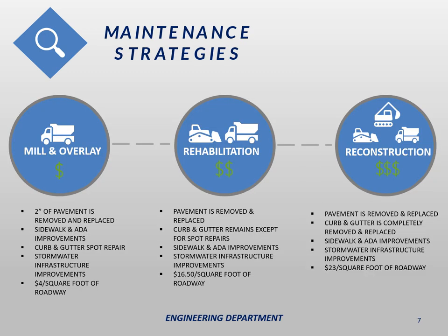There are three major types of projects we typically perform: a mill and overlay, a rehab, and a reconstruction. A mill and overlay is the simplest. During a mill and overlay we remove the top couple inches of pavement using a milling machine and then put down a couple inches of new bituminous or asphalt pavement. We are also required by law to update sidewalk and pedestrian ramps at intersections to make them ADA compliant, and we will replace certain sections of curb and gutter if it isn't draining or if it's significantly damaged.